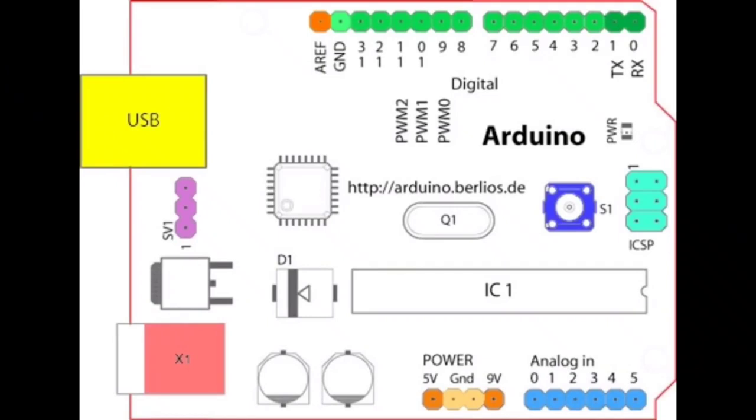Now let me discuss about pin description of Arduino. This is USB cable or B type jack. This is used to upload program in microcontroller. We can use Android phone as well to load the program with help of OTG cable.